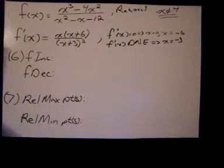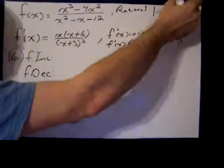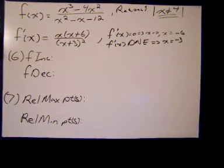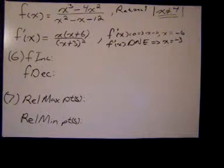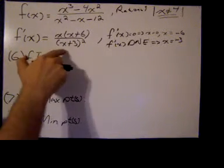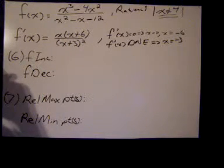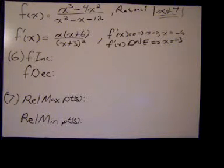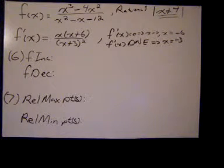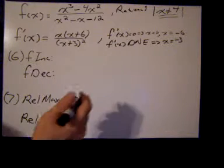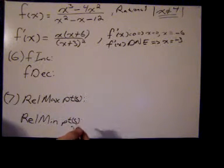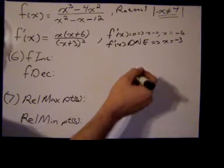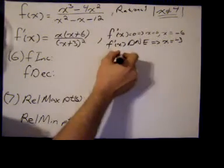We also remembered that because x could not equal positive 4 in the original function, even though it didn't turn up as a 'does not exist' or zero in f prime, we still needed to break our number line up at that number. There's a possibility that things can happen there, and the function doesn't exist there — it's not in the domain — so we have to include it.